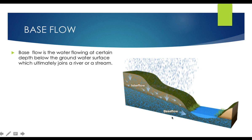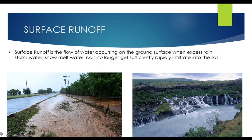Next — base flow. There is a stream of water flowing underground, below the surface. When this base flow goes and joins a river or stream at sufficient depth, it is called base flow. Base flow is the water flowing at a certain depth below the groundwater surface which ultimately joins the river or stream.